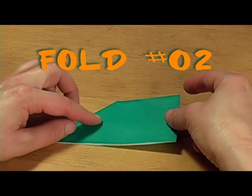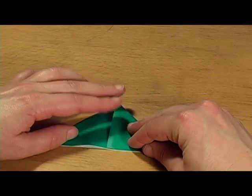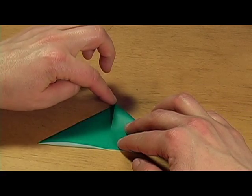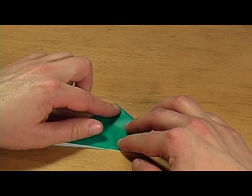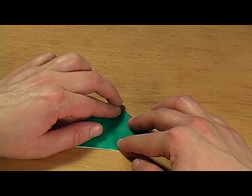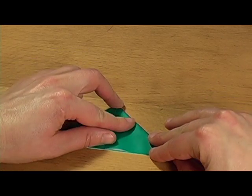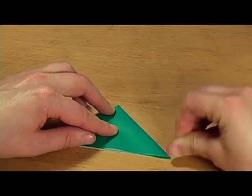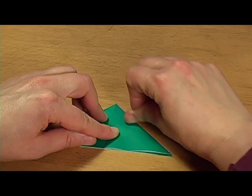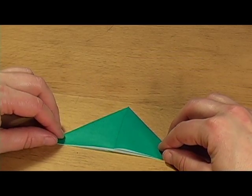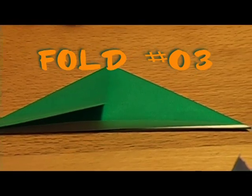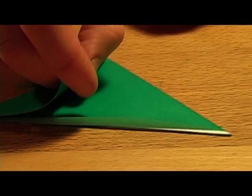Flip it over, do the same thing. Take this corner, bring it down so this edge lines up with the bottom and it makes a straight up and down line in the center of the triangle. Perpendicular line to make your math teacher happy. So now you have it folded on this side and the other side is exactly the same.